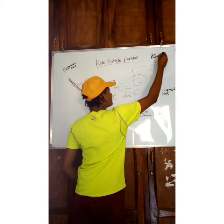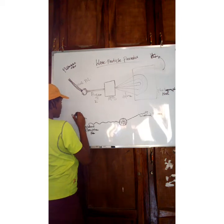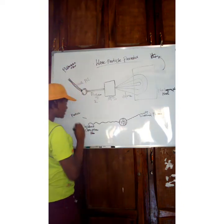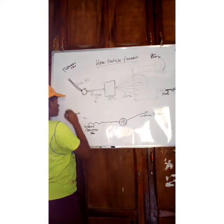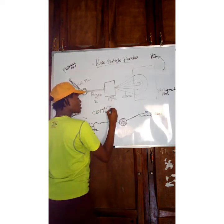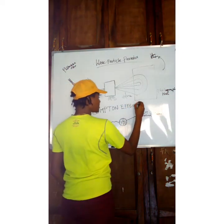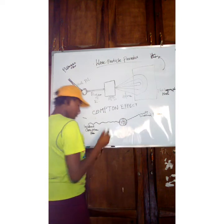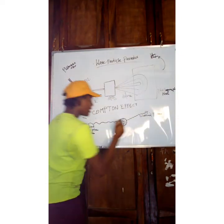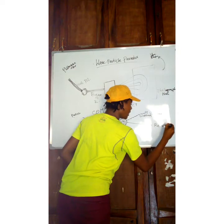This side shows the particle nature — there are two particles involved: the scattered photon and the recoiling electron. This is the Compton effect. The other electron that recoils after the collision is called the recoiling electron.